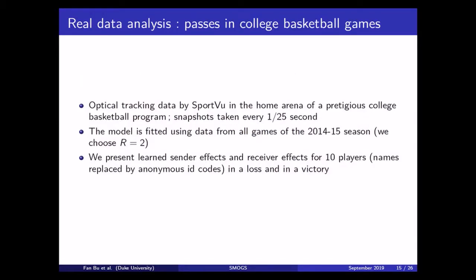Finally, on the real data analysis, just to recap, we have optical tracking data from a top college basketball program. This data set has 25 frames per second from a basketball game. We fit the model using all the data from the 2014-2015 season played in their home arena. So, in the next slide, I'm going to present the learned latent sender effects and latent receiver effects for 10 players on the team. And I'm going to contrast those effects between a lost game and a won game.